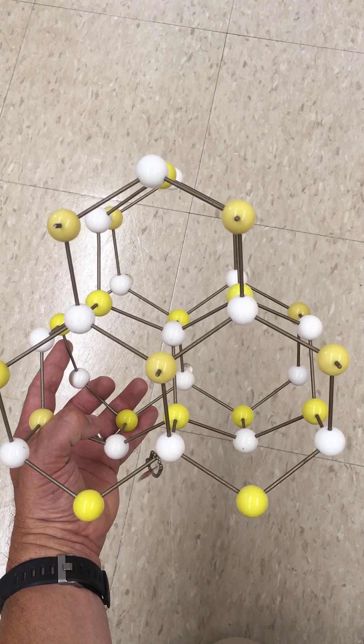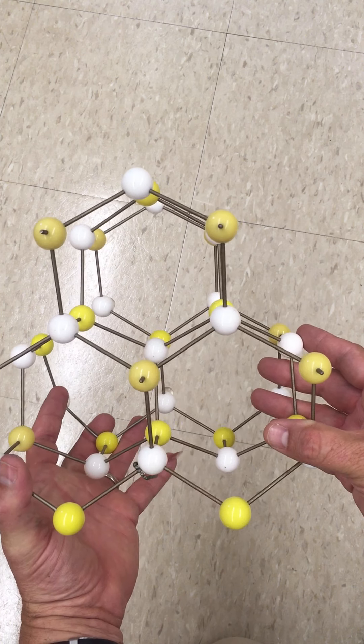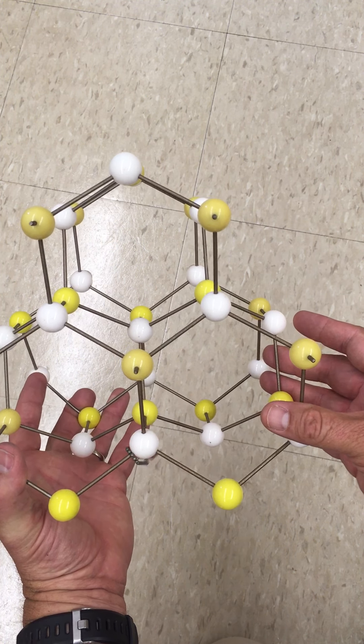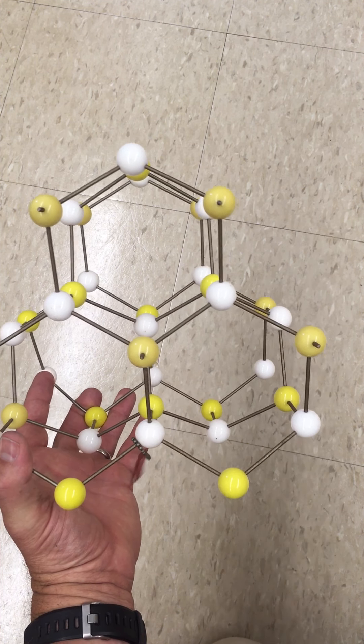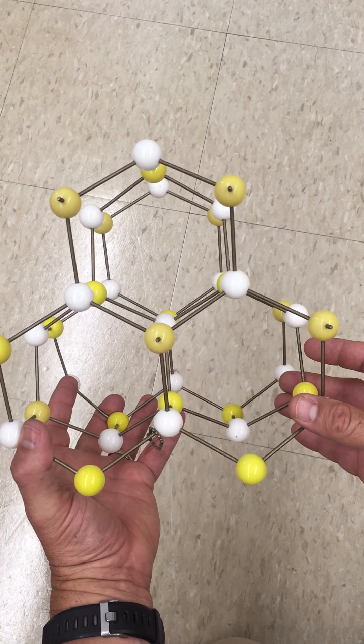So this is an A, B, A, B closest pack arrangement of sulfide ions with, again, zinc filling in half of the tetrahedral holes. And this is a hexagonal type geometry in contrast with the other geometry, which we consider more of a cubic closest packing type geometry.